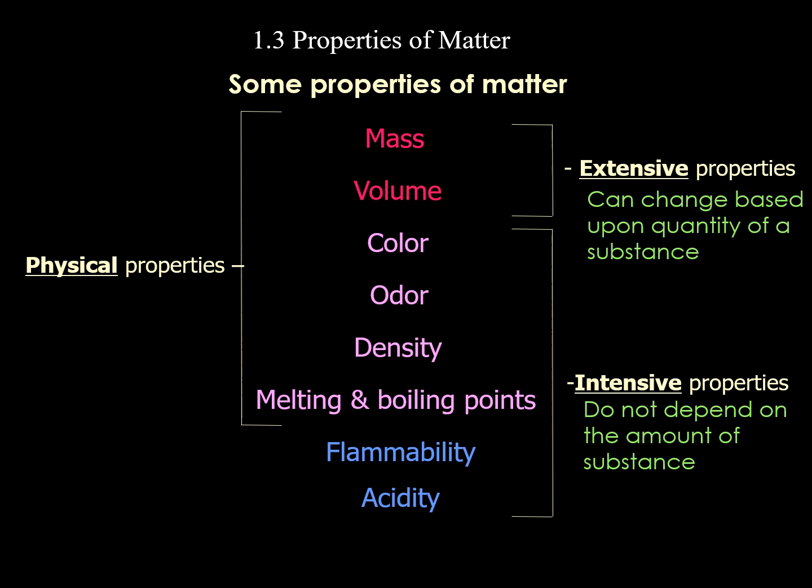On the right side we talk about extensive properties — if you change the amount of a substance, the quantity changes as well. If I add more mass, that changes, so mass is an extensive property. Conversely, intensive properties do not depend on the amount. The density of pure water is 1 gram per mL — always true regardless of whether you take water from a cup or a bathtub. The boiling point of water is 100°C. Flammability is also intensive — whether you have a little or a lot of wood, its flammability remains constant.